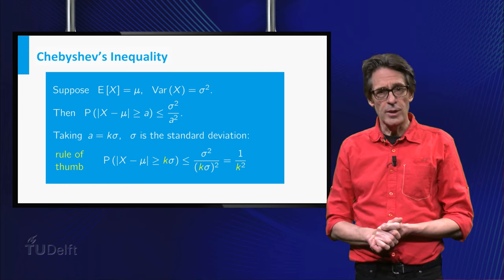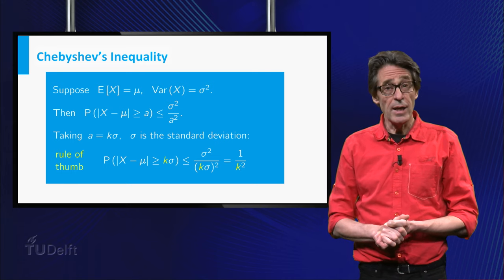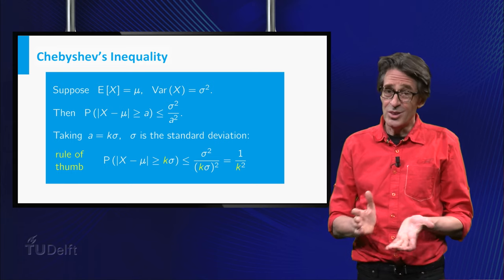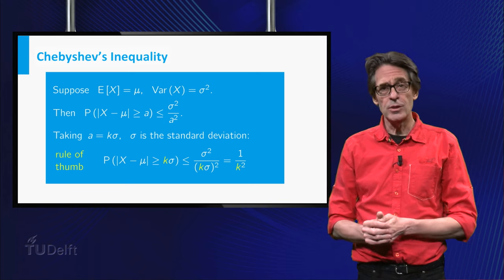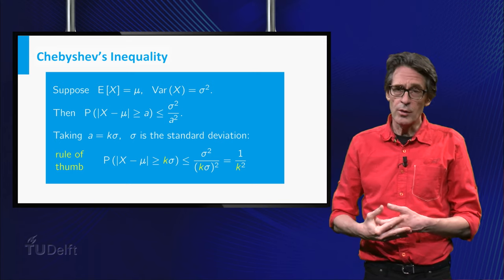The great thing about the inequality is that it holds for every random variable. The drawback is that in many cases the information it gives is rather on the safe side.